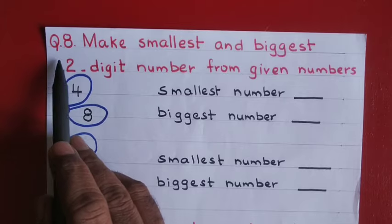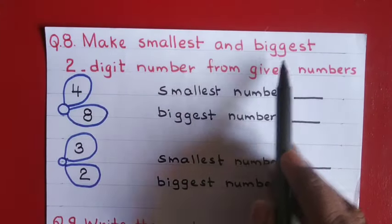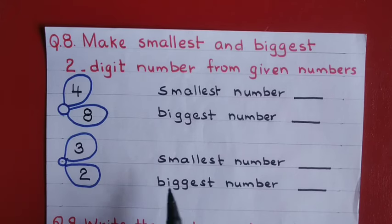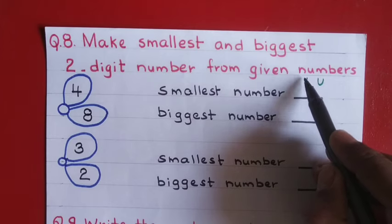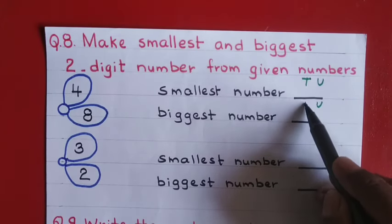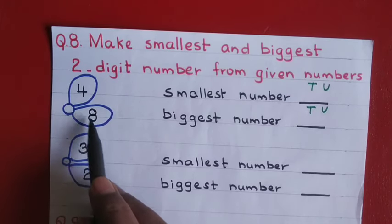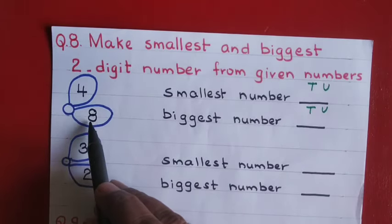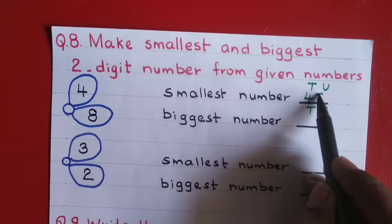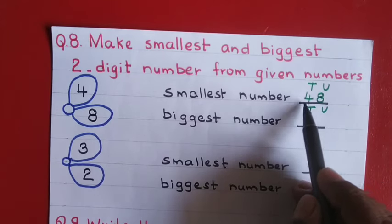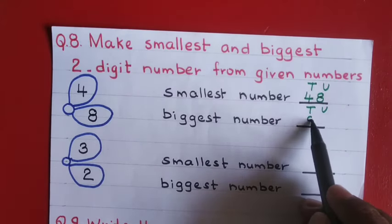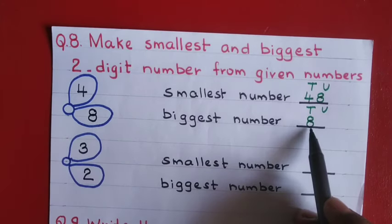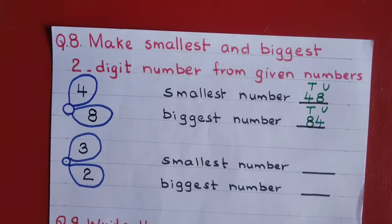Question number eight: make the smallest and biggest two-digit number from given digits. A two-digit number has two places — units place and tens place. To make the smallest number, put the smaller digit at the tens place: four at tens and eight at units gives forty eight, the smallest. To make the biggest number, put the bigger digit at the tens place: eight at tens and four at units gives eighty four, the biggest.